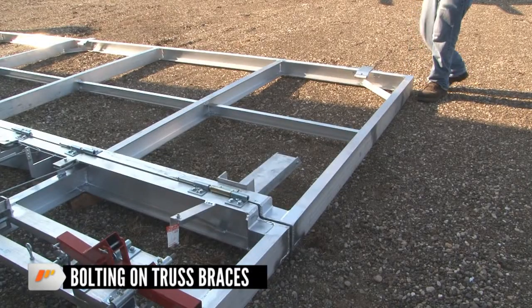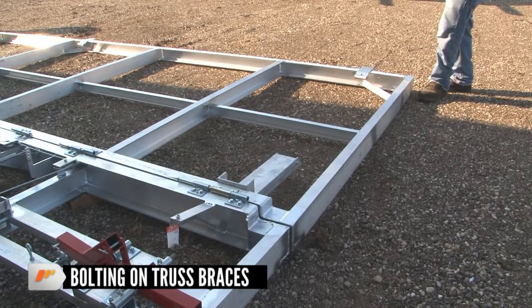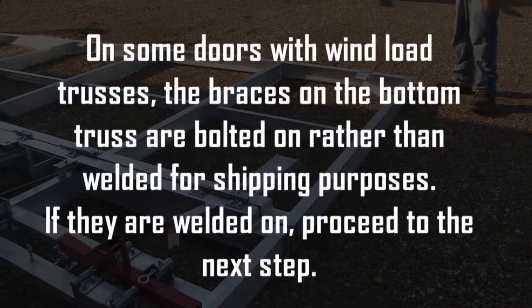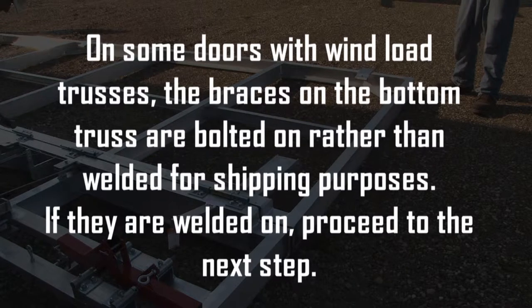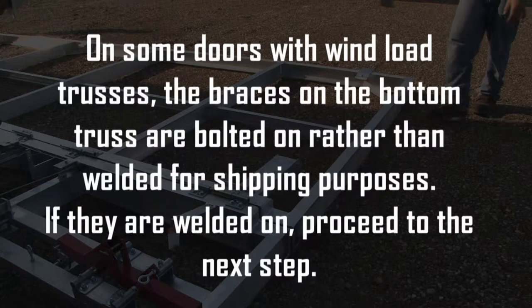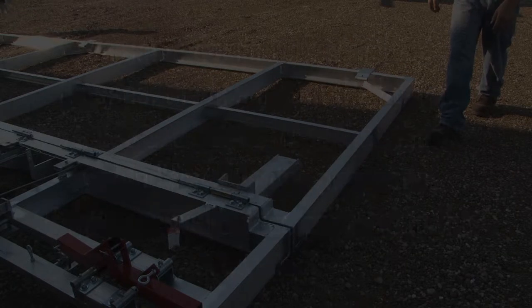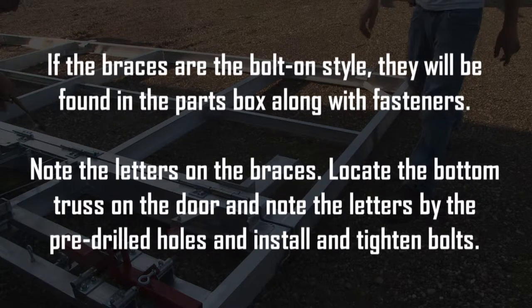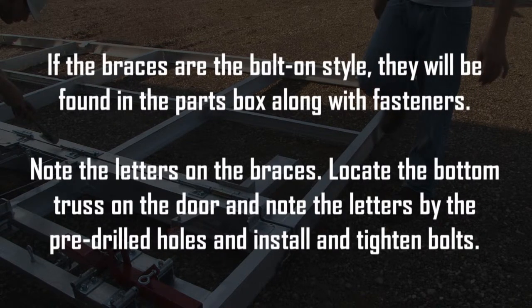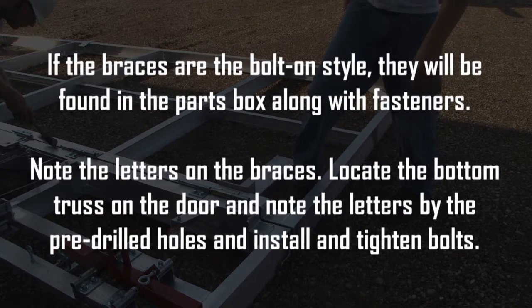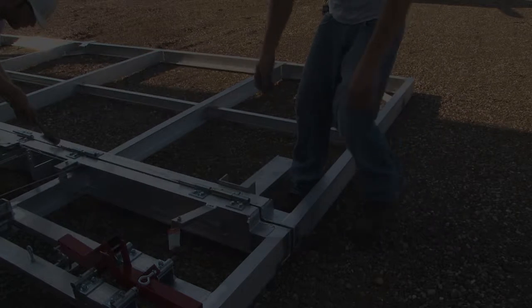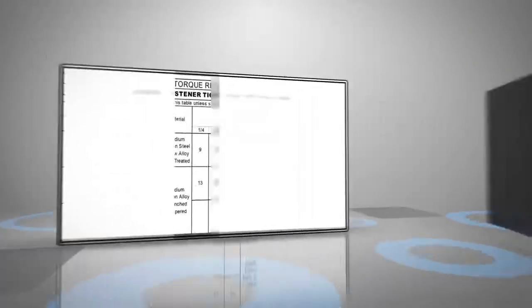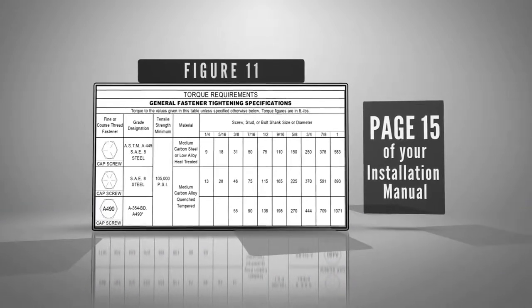Bolting on truss braces. If your door is not equipped with a truss, proceed to the next step. On some doors with wind load trusses, the braces on the bottom truss are bolted on rather than welded for shipping purposes. If they're welded on, proceed to the next step. If the braces are the bolt on style, they'll be found in the parts box along with fasteners. Note the letters on the braces. Locate the bottom truss on the door and note the letters by the pre-drilled holes and install and tighten bolts. See figure 23. For recommended torque, see figure 11 on page 15 in the manual.